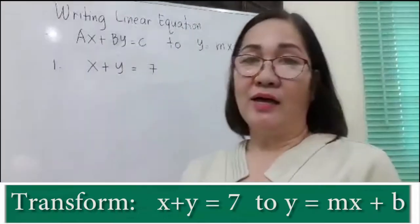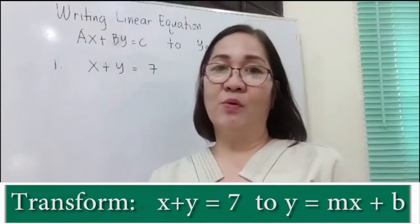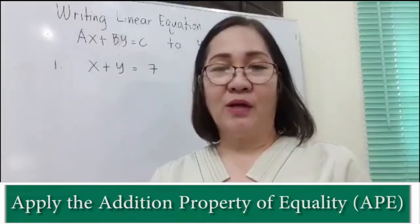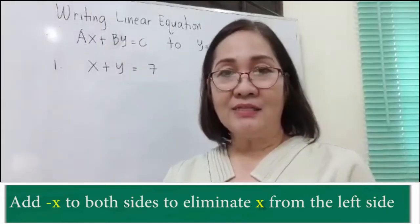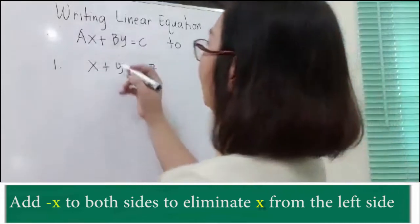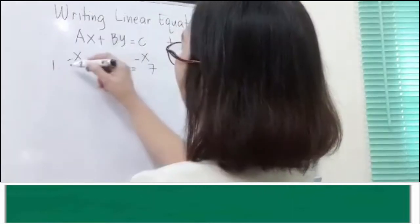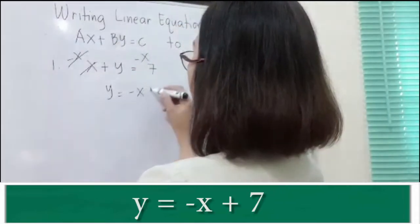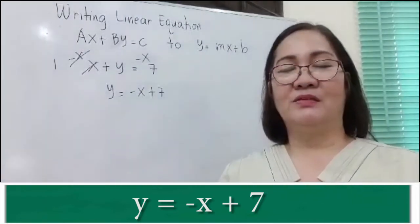Transform x plus y is equal to 7 to the slope-intercept form y is equal to mx plus b. We're going to use the addition property of equality by adding negative x to both sides to eliminate x from the left side. So we have y is equal to negative x plus 7. That is the slope-intercept form.